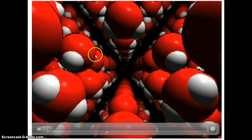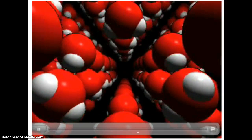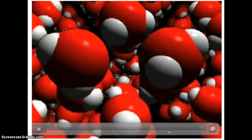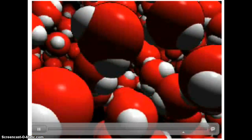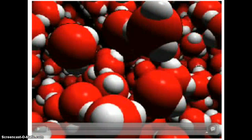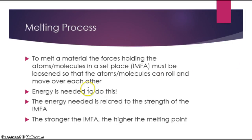So there are the metal atoms, if we think of these as metal atoms instead of water molecules. As I heat this up, I can vibrate the molecules faster and faster until I loosen those forces enough that the molecules are now moving around — so now we're in the liquid form. You supply energy to the solid and you can melt it. The energy needed is related to the strength of that IMFA. So the stronger the IMFA, the higher the melting point, or the more energy is going to be needed to melt the material.